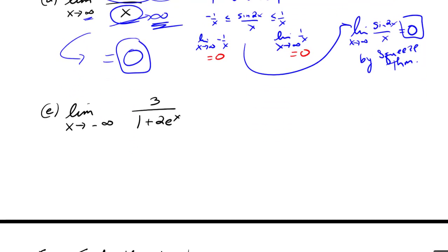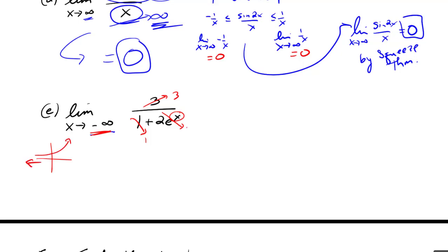Another example: the limit as x approaches negative infinity of three over one plus two e to the x. We look at each term: three stays at three, one stays at one. As x goes to negative infinity, e to the x goes to zero because large negative exponents make the exponential shrink smaller and smaller. So two e to the x goes to zero, giving three over one, which is three.